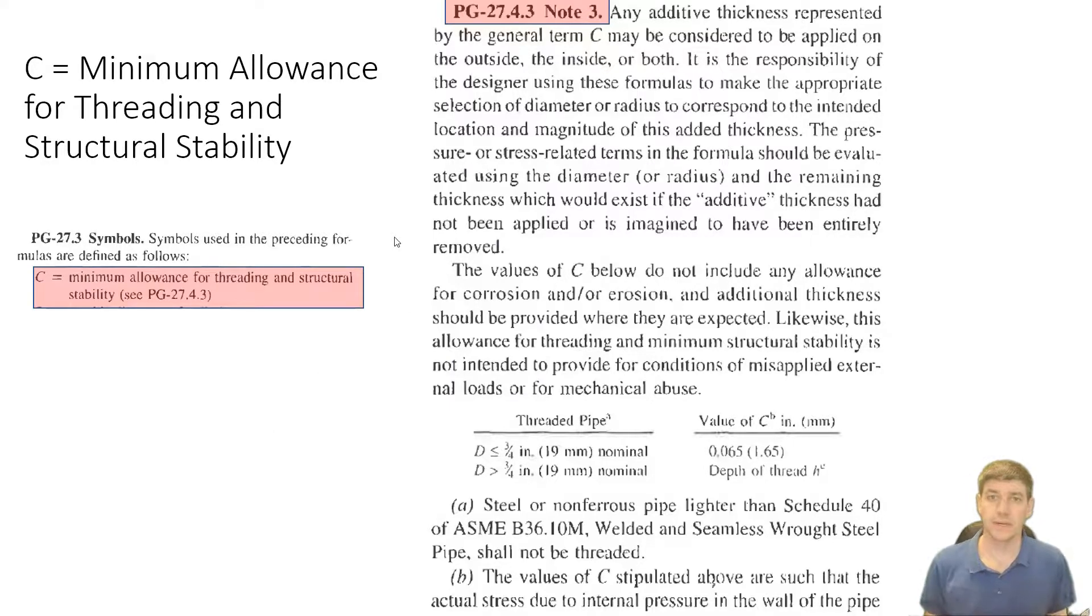We have another clause, C, which is the minimum allowance for threading and structural stability. So paragraph 27.3, our symbols says, okay, C is the minimum allowance. C, paragraph 27.4.3. And so if we go look at that, we've got a fairly long section.